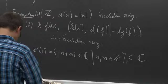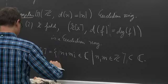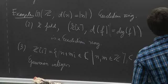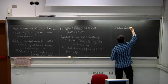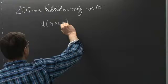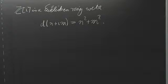Another example: Z[i], the Gaussian integers — the set of all n plus mi where n and m are integers. These are the points in the complex plane with integer coordinates, forming a subring of the complex numbers. We claim this is a Euclidean ring.